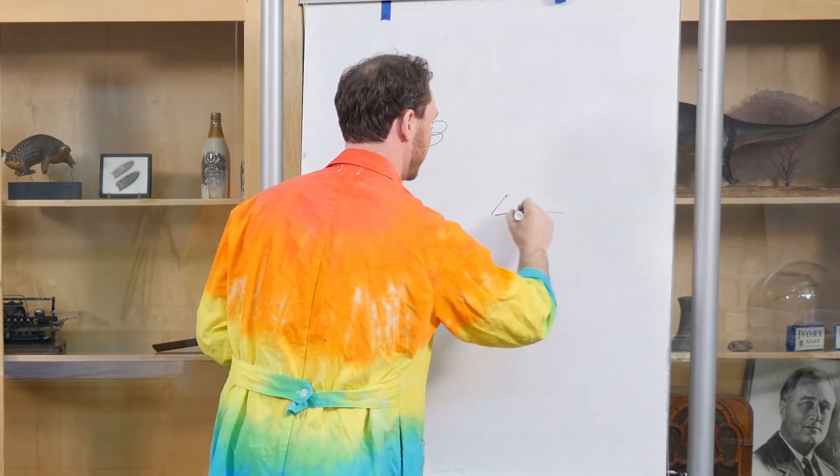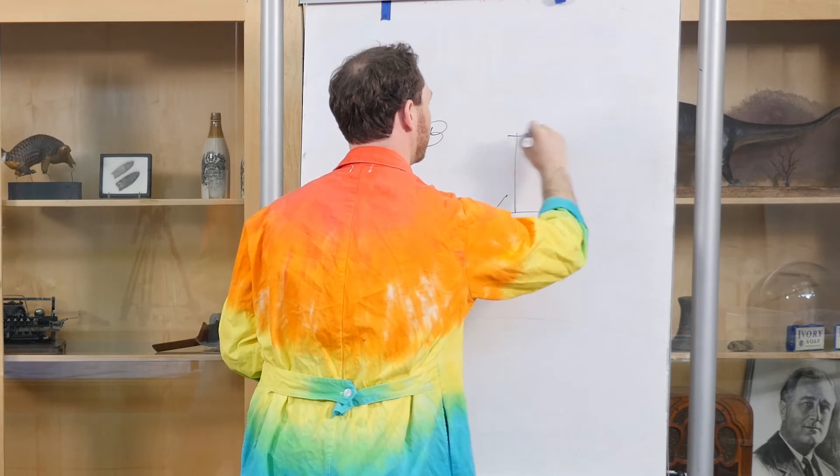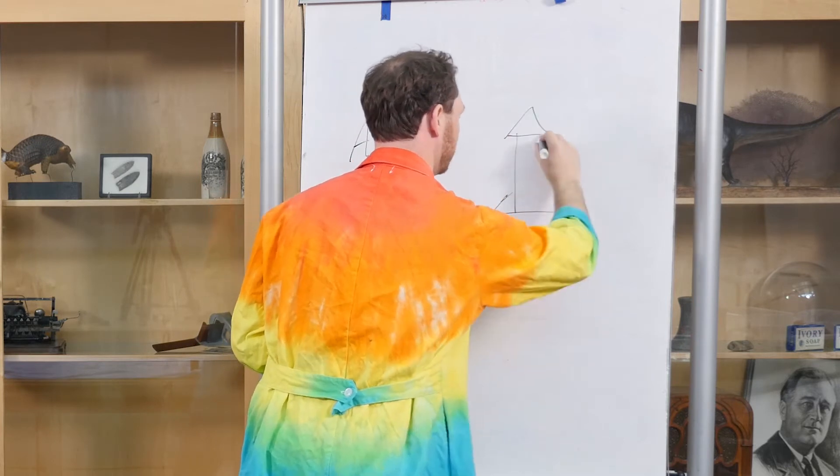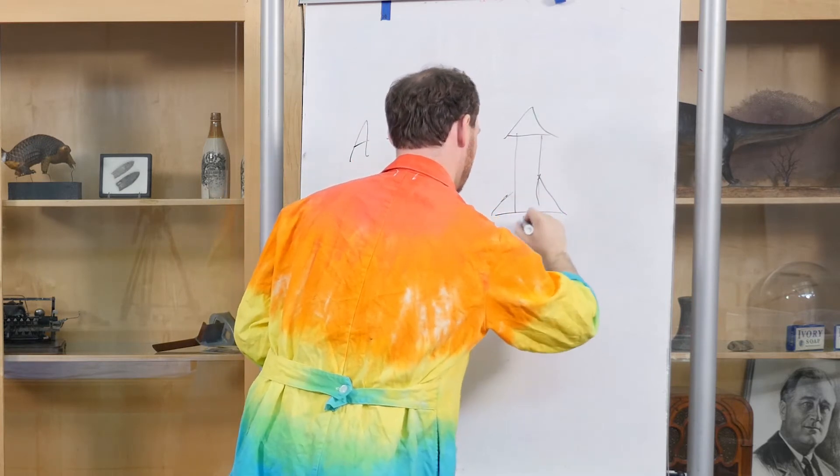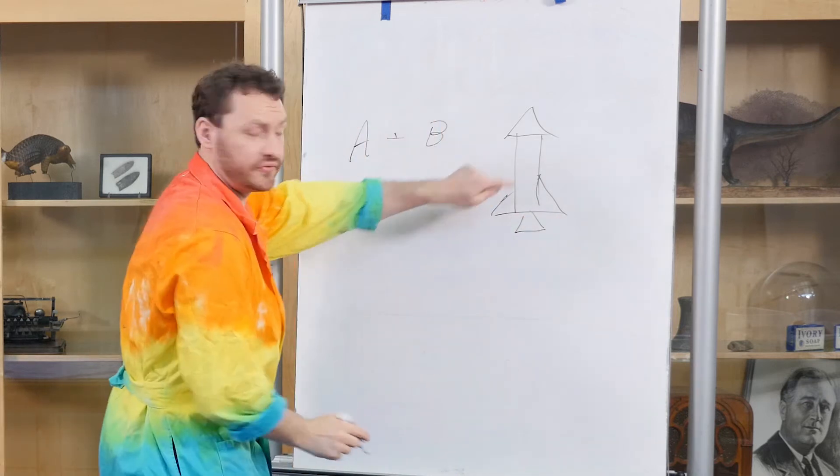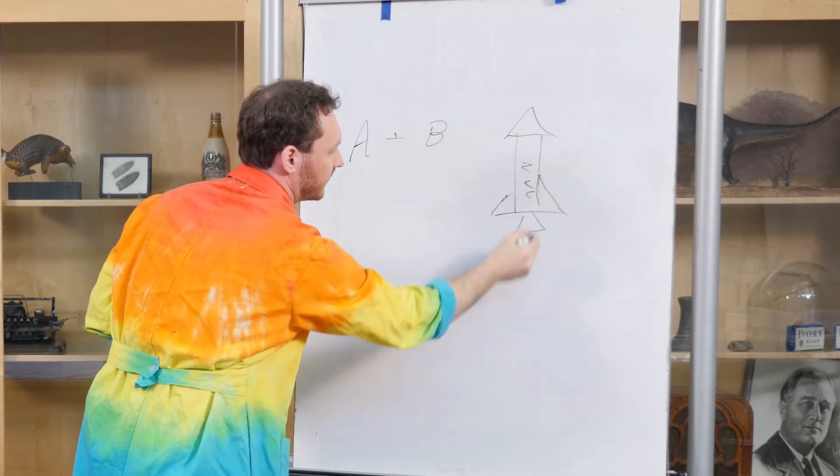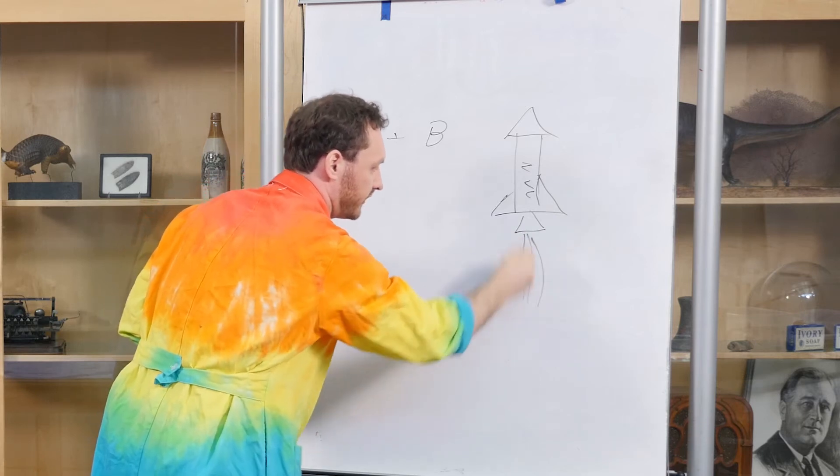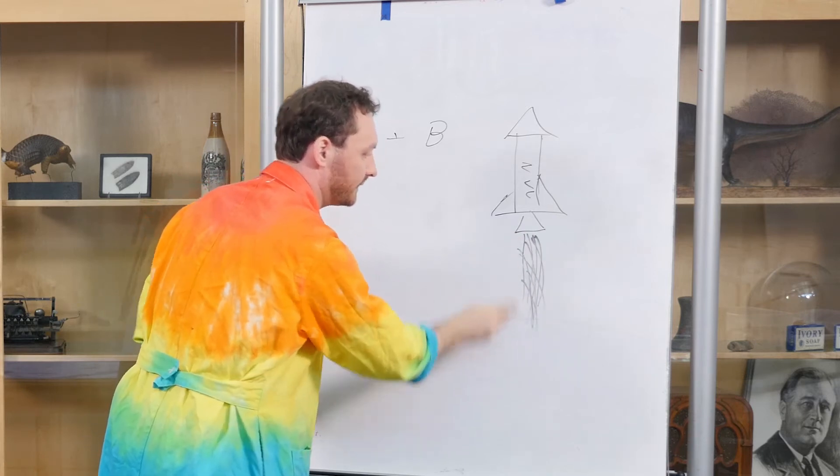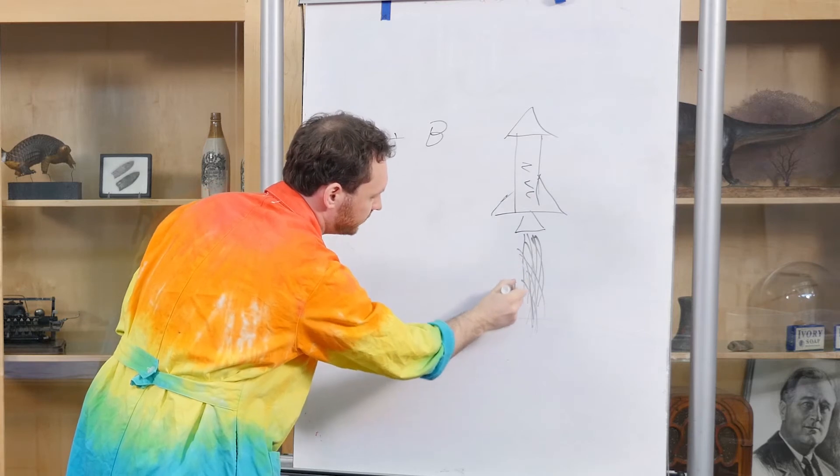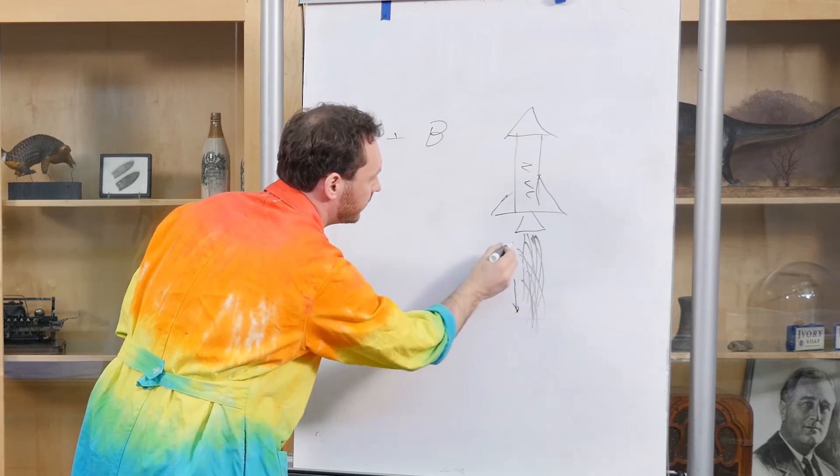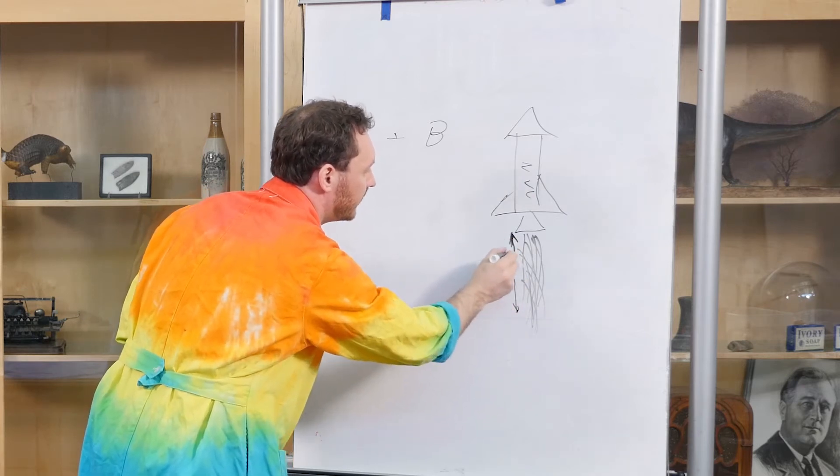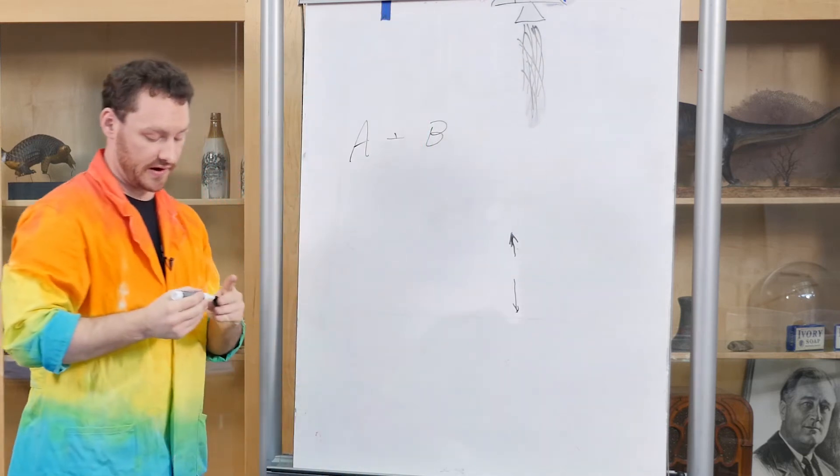So let's say this is my rocket here. My fuels mix up in here and they react, and they create thrust that flies out of the back of that rocket. And as that thrust is pushing down that way, it is also pushing up against the rocket, and that's what makes it fly up in the air.